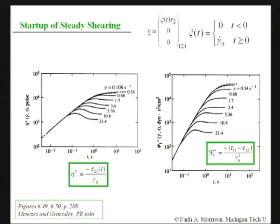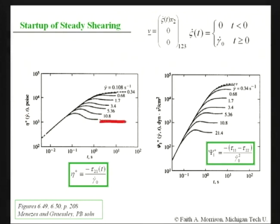This first slide on large strain will be familiar - this is Menz and Grassley's polybutadiene data for the startup function. We've seen before that there's an overshoot in the startup viscosity function eta plus before the data come to a steady plateau value. We're going to see constitutive equations that can predict these different plateaus. The first normal stress coefficient also shows an overshoot and is a function of shear rate. We'll have to work harder to get a constitutive equation that predicts these overshoots.